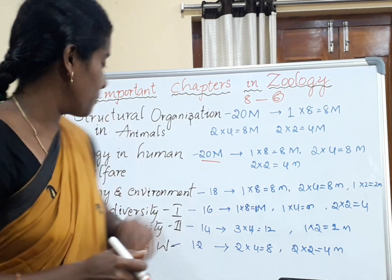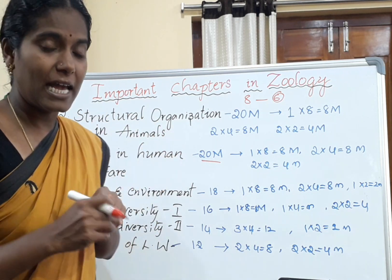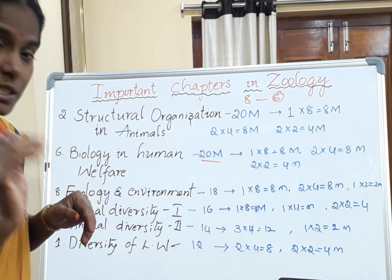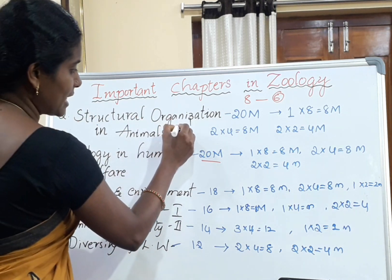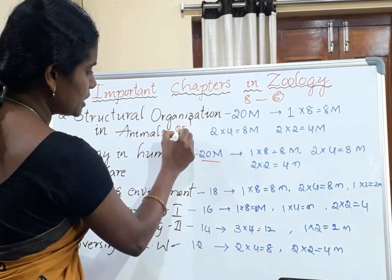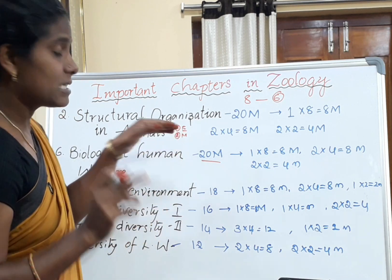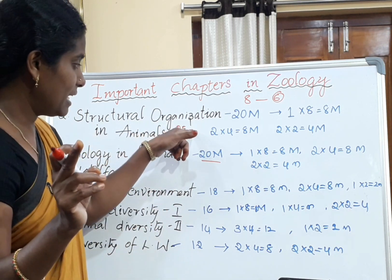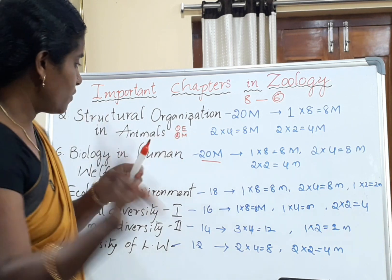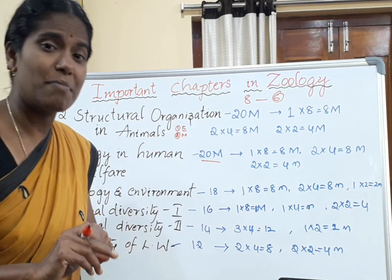Coming to Structural Organization in Animals, here are the important essay questions: epithelial tissues, muscle tissues, and skeletal tissues. These are the three essay questions I recommend. Compare and contrast muscle tissues is also a key question — definitely read muscle tissues thoroughly.